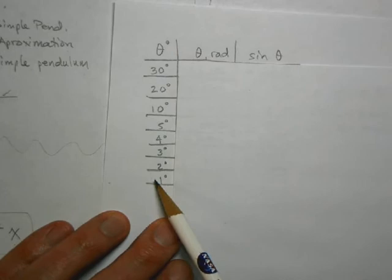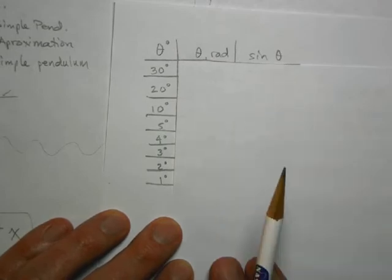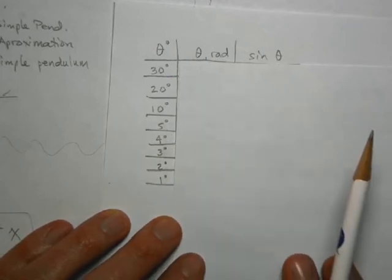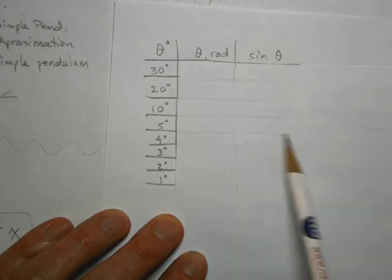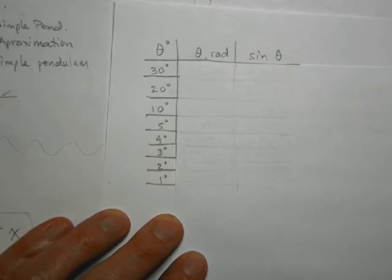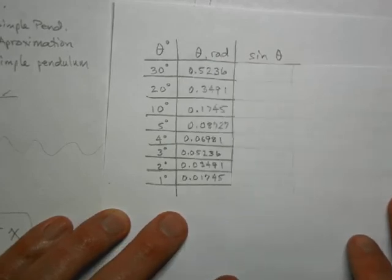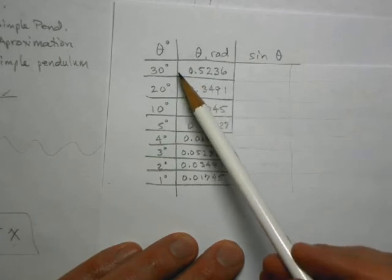I have a little task for you. I want you to see something very cool about theta and sine(theta) when the angle gets really small. I've made a table with a bunch of angles. Convert those angles to radians and then, with your calculator in radian mode, take the sine of each angle. It should take about five minutes, so pause the video now and fill out this little chart to see what you get.